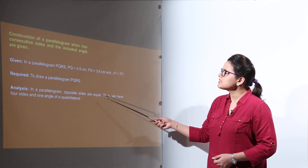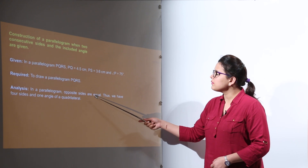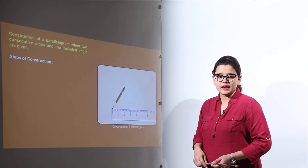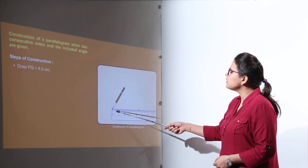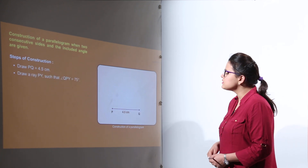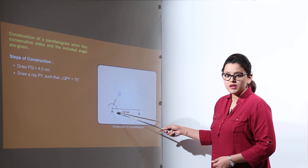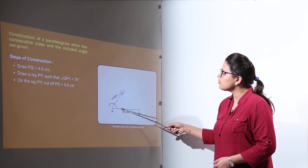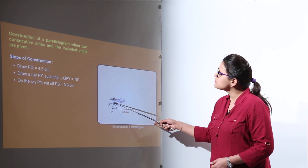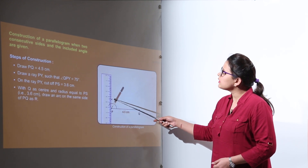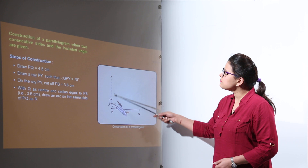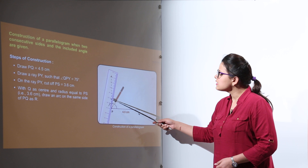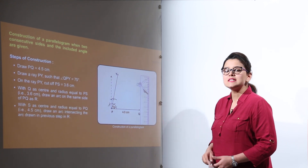The analysis is that in parallelogram PQRS the opposite sides will be equal, and we have the four sides and one angle given. We start by drawing PQ of 4.5 centimeters. The next step is drawing the angle of 75 degrees at point P. For the 75 degrees construction, we take an arc of our chosen radius, cut arcs at 60 and 120 degrees. From 60 and 120, without changing the radius, we cut arcs to make 90 degrees. Then from 60 and 90 we cut arcs and the point of intersection joined with P gives 75 degrees.